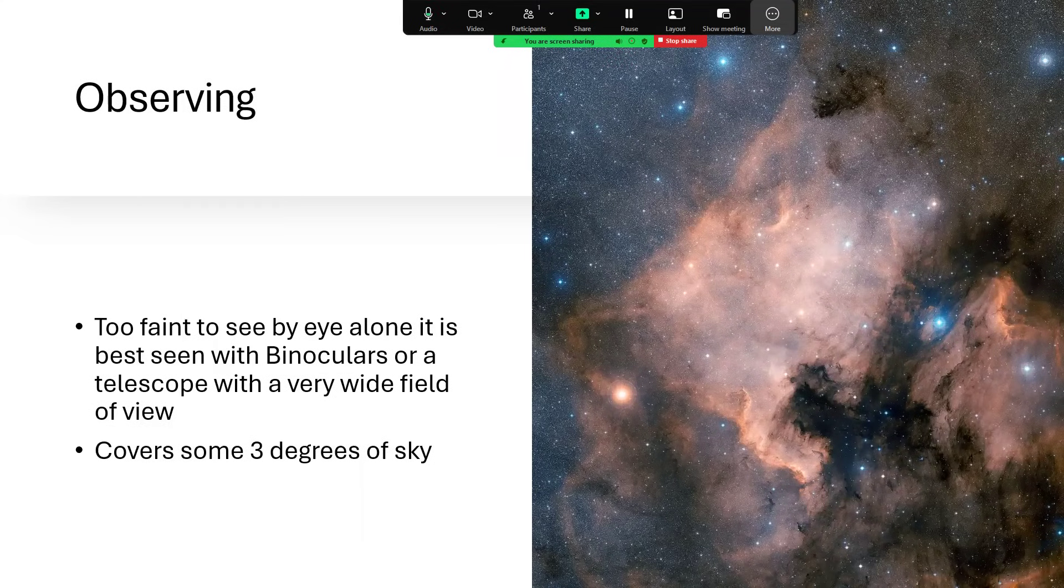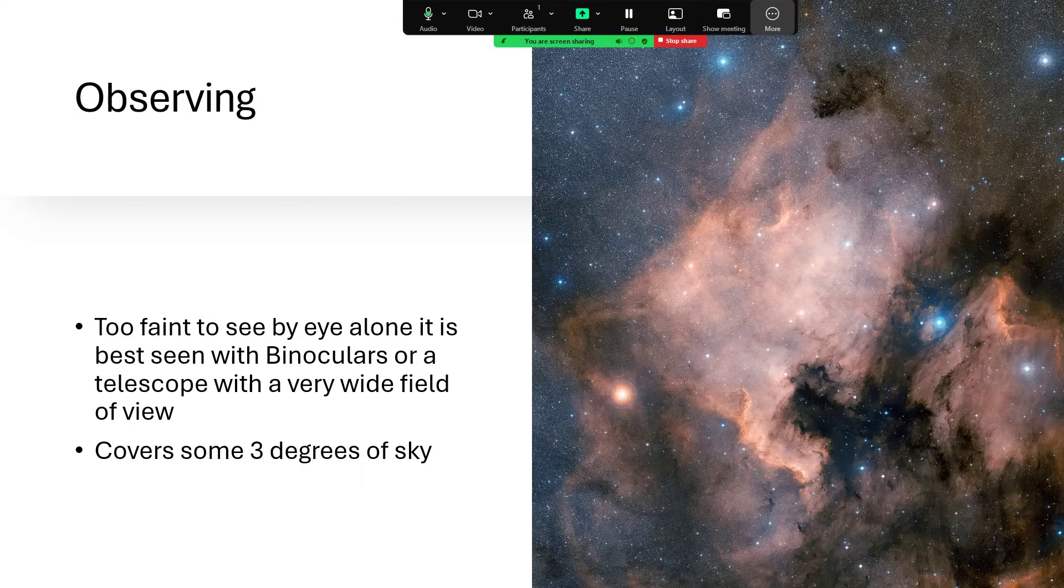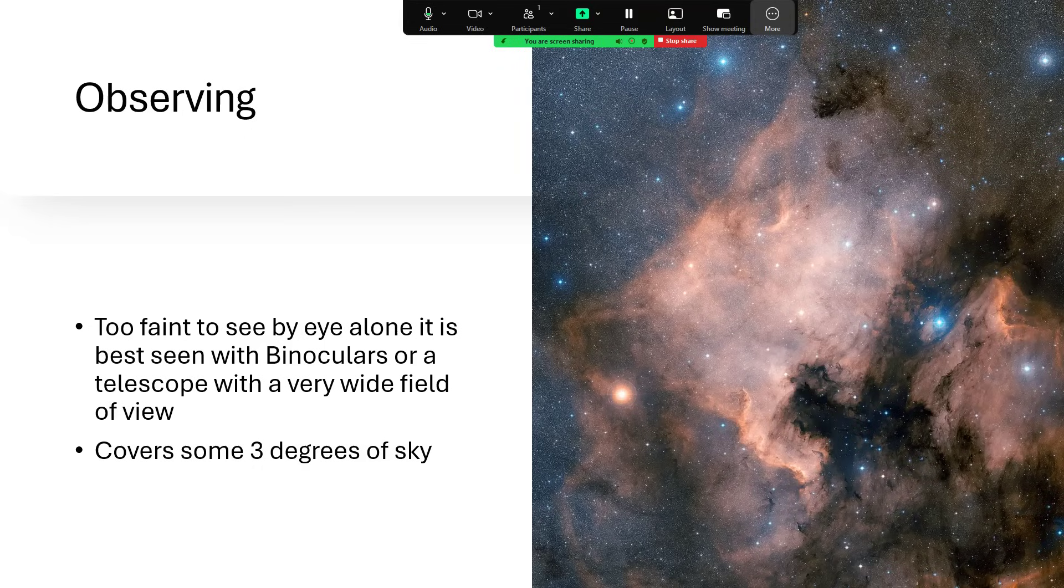Too faint to see by eye, but with binoculars or a telescope with a really wide field of view, three degrees is a very wide field, you can get the most fantastic images. I've taken pictures of it using a short lens on a camera, a 50 millimeter or 70 millimeter camera lens is probably about right.